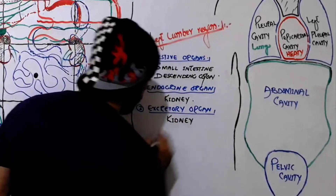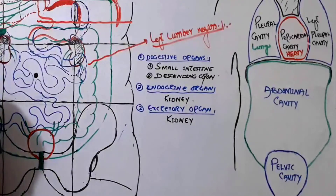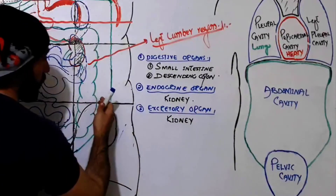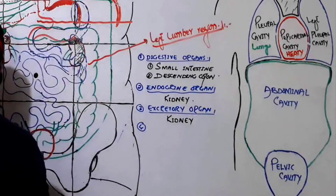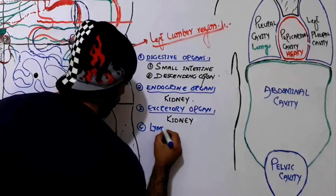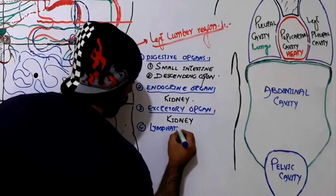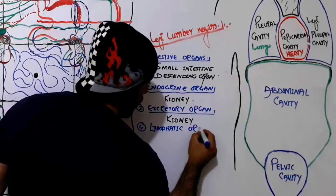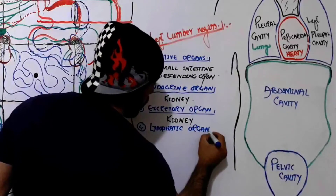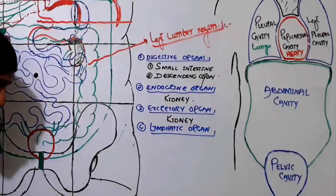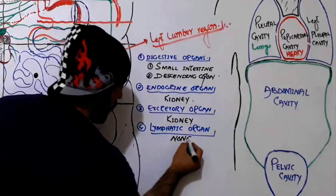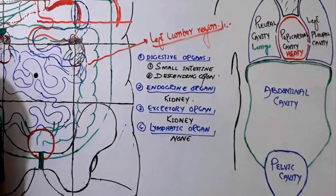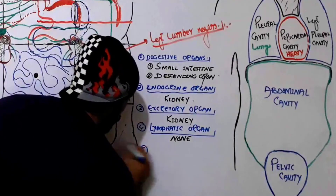Our kidney plays a very important role in the excretion of different substances, so the excretory organ found in the left lumbar region is the kidney. As for lymphatic organs — not lymph nodes, but lymphatic organs — no lymphatic organ is found in the left lumbar region. Please watch the previous lectures for a clear concept of the difference between lymph nodes and lymphatic organs.